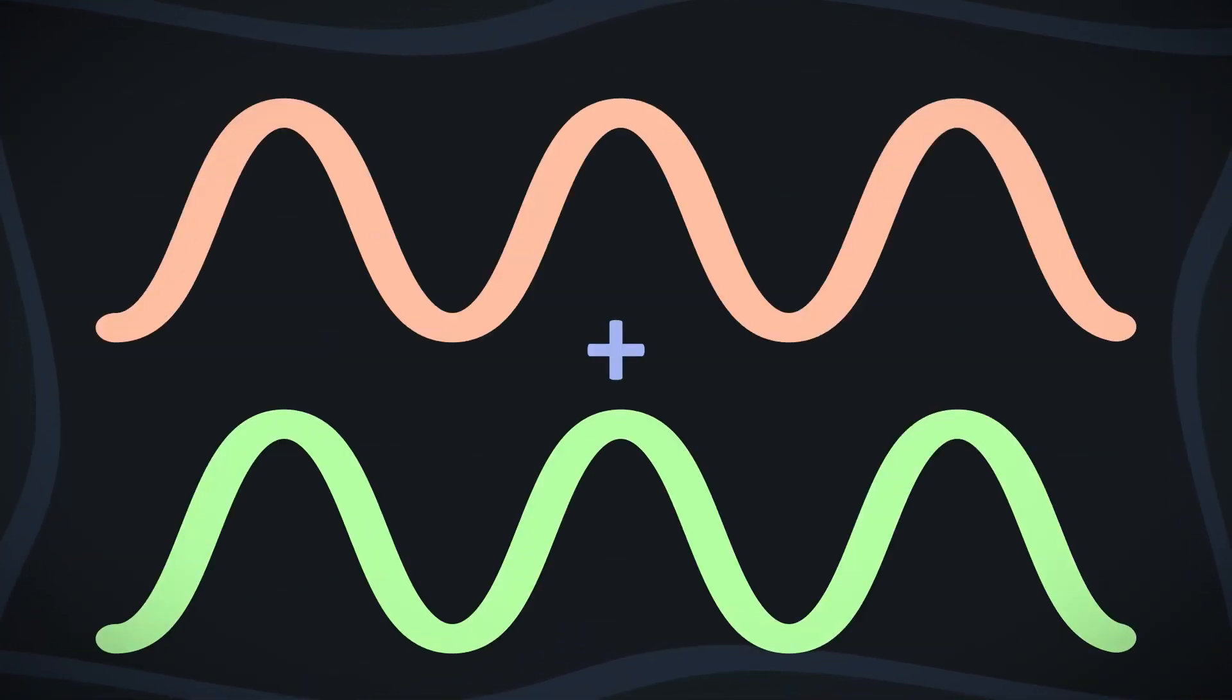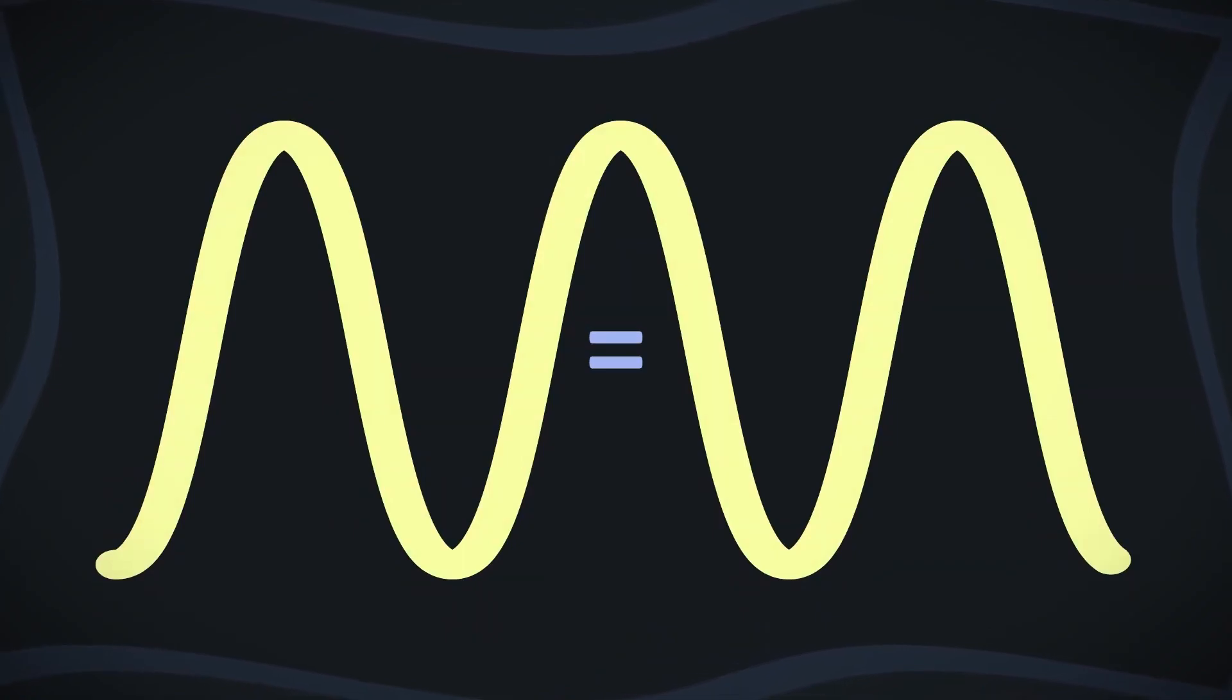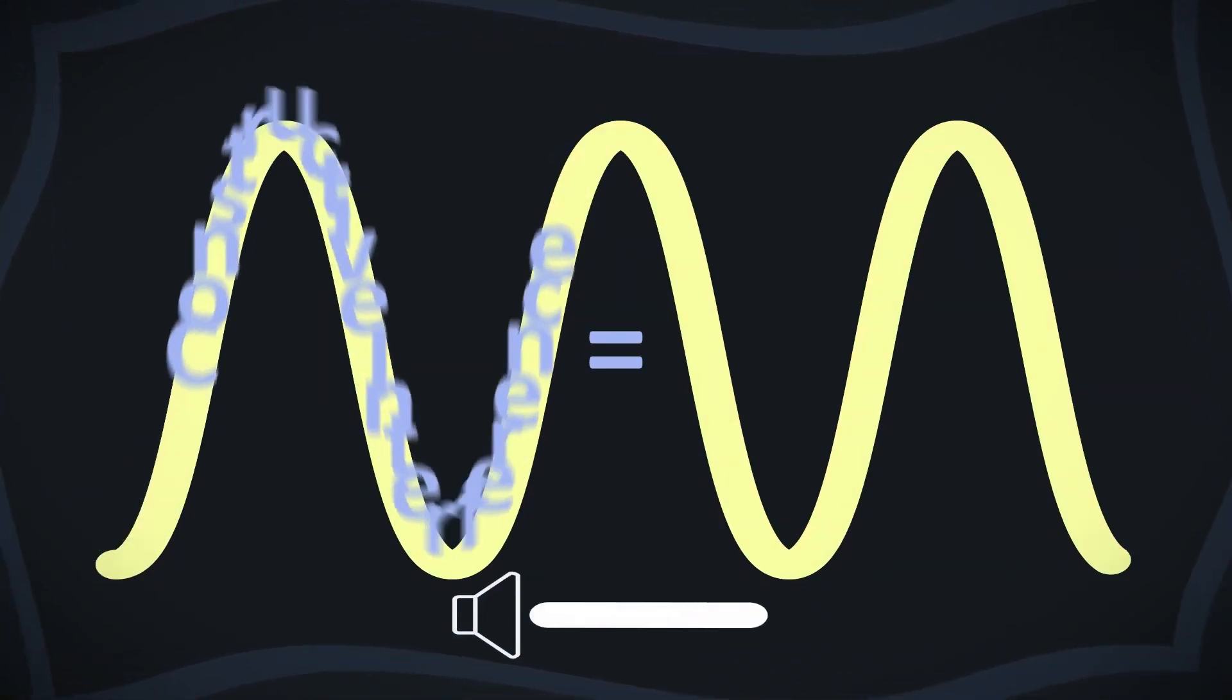So if we had two sound waves of equal frequency interfering with each other, the result would be a sound wave with twice the amplitude, or twice the volume, of the original.